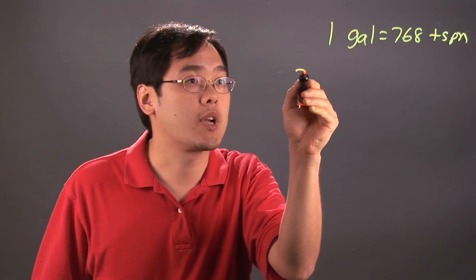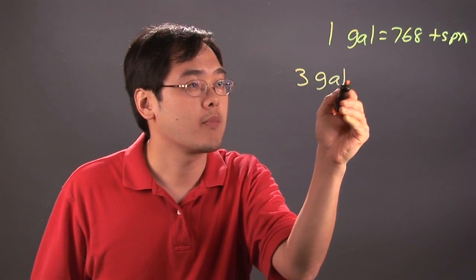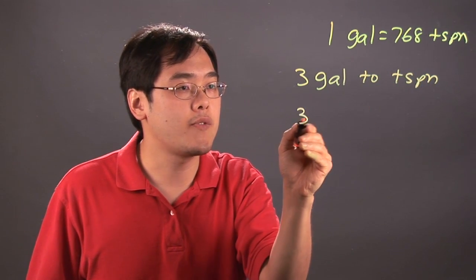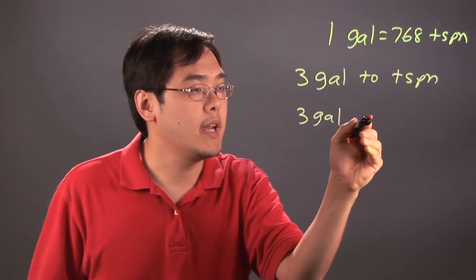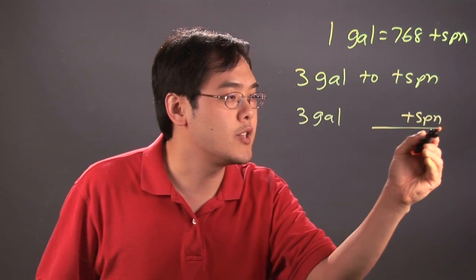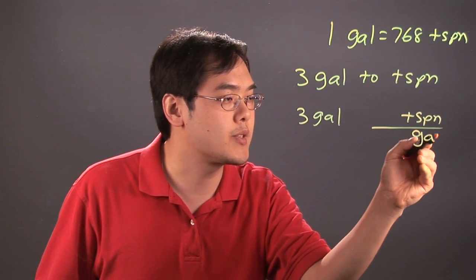Now, let's just say you want to convert three gallons to teaspoons. So all you're doing is you're starting off with three gallons, and since you're converting to teaspoons, that is going to be the unit that's on top. And since you're converting from gallons, gallons are going to be at the bottom.